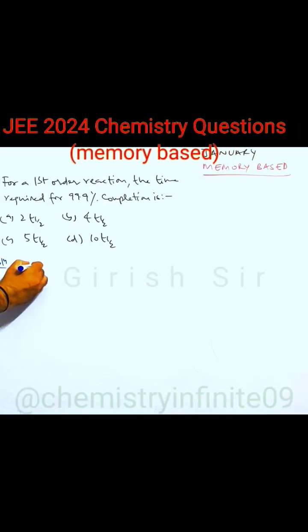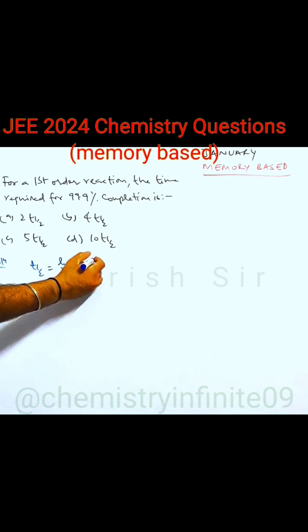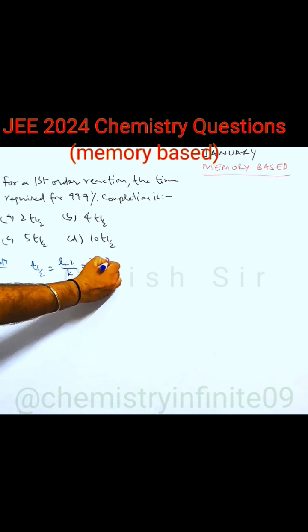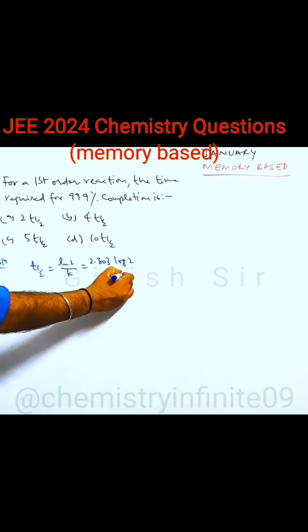Now, for our first order reaction, the half life is ln 2 by k, which can also be written as 2.303 log of 2 by k.